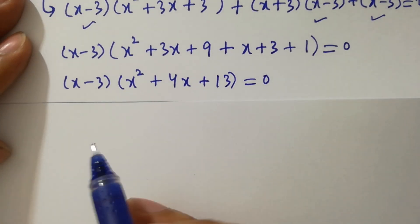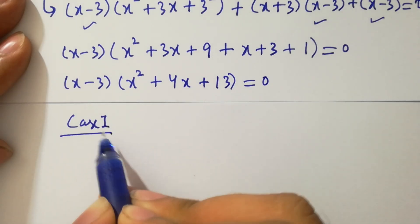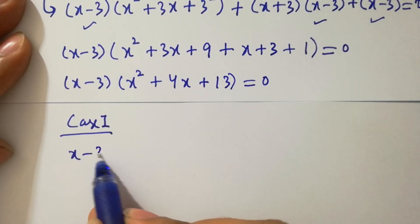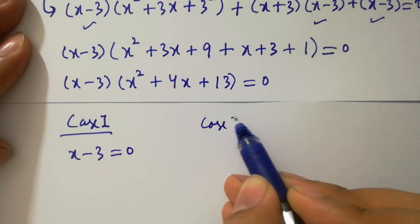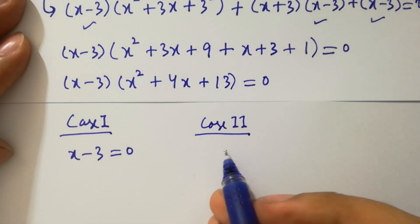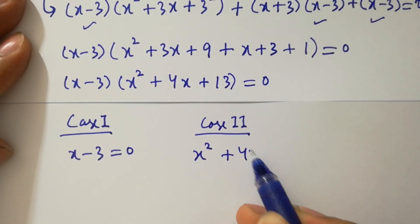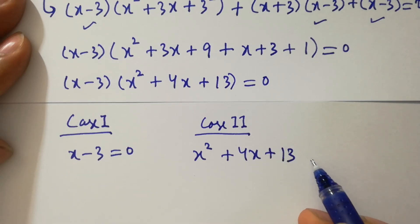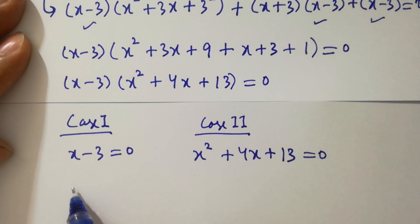So we have two cases here. Case 1: x minus 3 equals 0. Case 2: x squared plus 4x plus 13 equals 0.